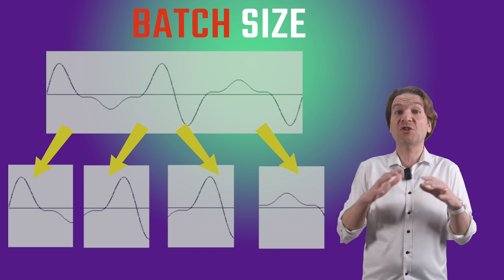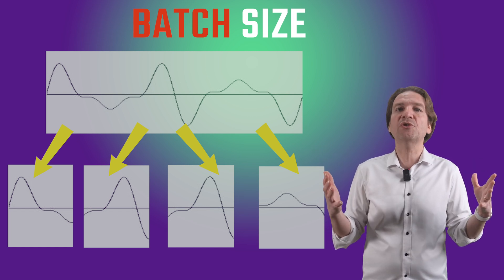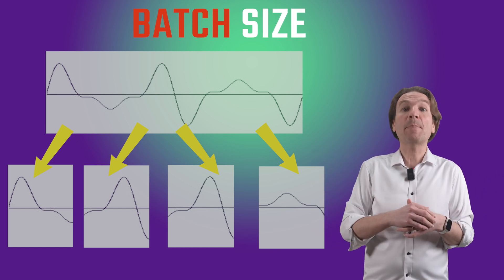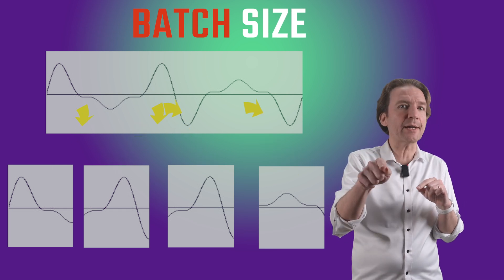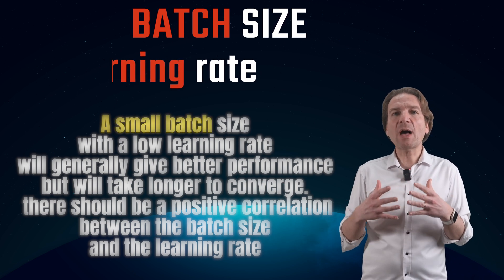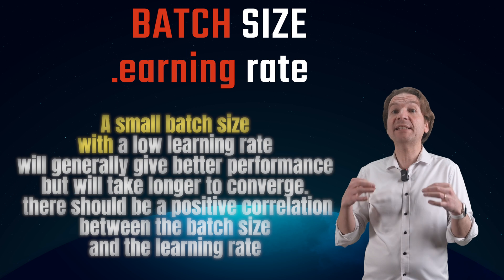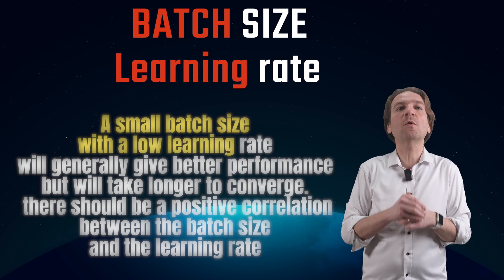Typically a large batch size requires a lot of computational resources to complete an epoch, but requires fewer epochs to converge to the target. On the other hand, small batch size typically requires less computational resources to complete an epoch, but requires a high number of epochs to converge.